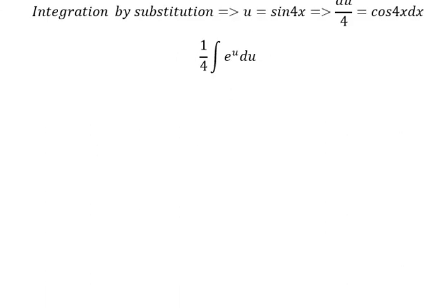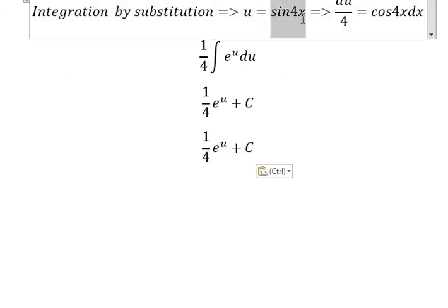So we have the integral of e to the power of u. That's 1 over 4 e to the power of u plus c. And then that u, we need to change back to sine 4x.